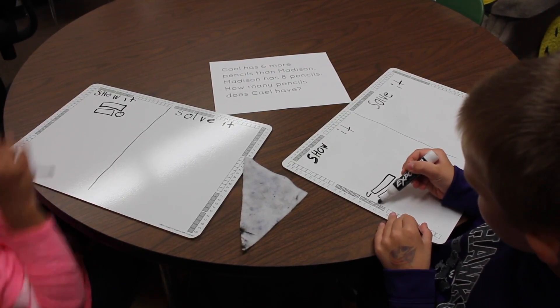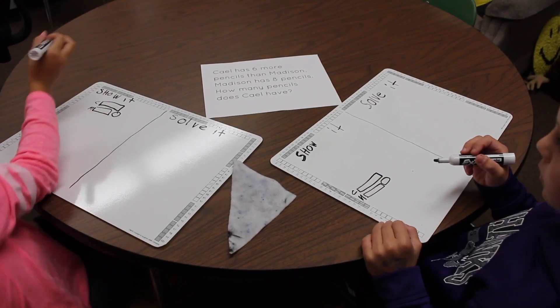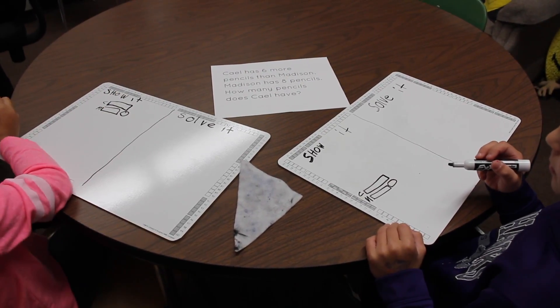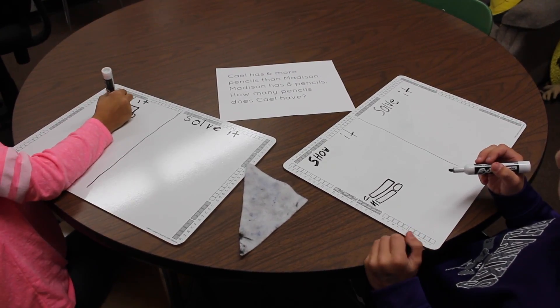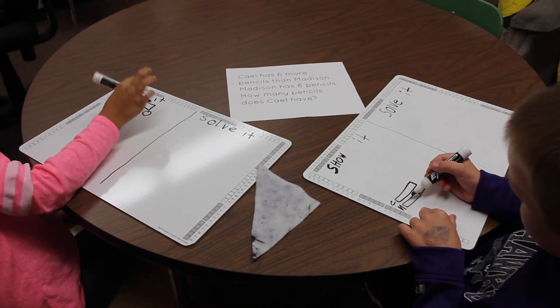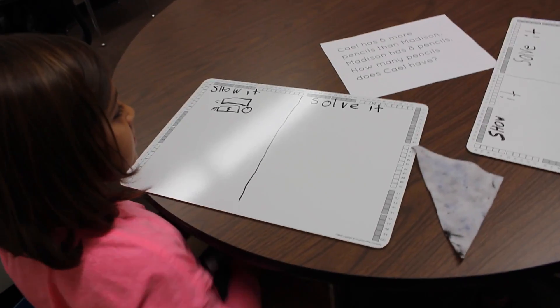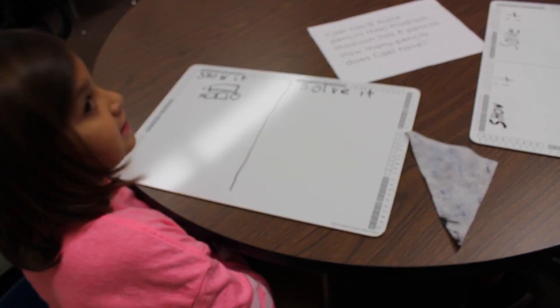And is there some information you could put in your comparison bars? Oh, nice. Yes, we could put Madison's in the bottom bar. Okay Madison, do you agree? Why can we do that? Since it says Cal has six more.